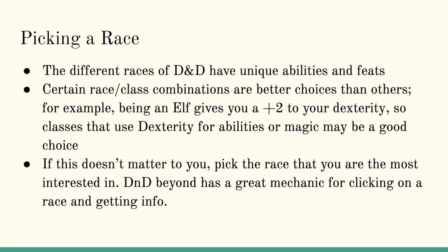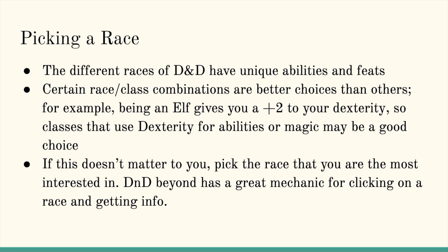D&D Beyond has a great mechanic for clicking on a race and getting info. If you go to build a character and click on a race, it should give you general information as well as what ability modifiers you would get by choosing that race. Feats are special abilities. Depending on what race you select, as well as optional rules your dungeon master can use, you will occasionally be granted special abilities called feats. For example, the halfling race has the lucky feat, which allows you to re-roll ability checks where you roll a one. This is a huge special ability considering that rolling a one usually means a critical failure of whatever you are attempting to do.